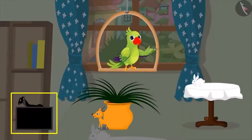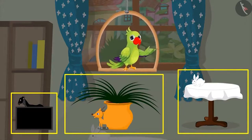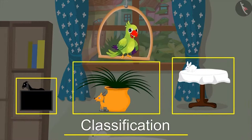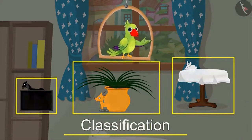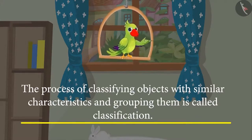Did you see how Chotu classified the animals based on their color and placed them with objects matching their colors? Do you know what this process of grouping objects on the basis of their characteristics is called? This process is called classification of objects. Based on the characteristics, the process of classifying objects with similar characteristics and grouping them is called classification.